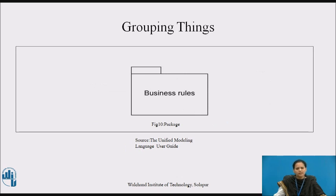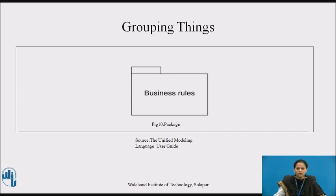Grouping things are the organizational parts of UML models. These are the boxes into which a model can be decomposed. There is one primary kind of grouping thing, namely packages. A package is a general-purpose mechanism for organizing elements into groups. Structural things, behavioral things and even other grouping things may be placed in a package. Graphically, a package is rendered as a tabbed folder, usually including only its name and sometimes its contents, as shown in figure 10.